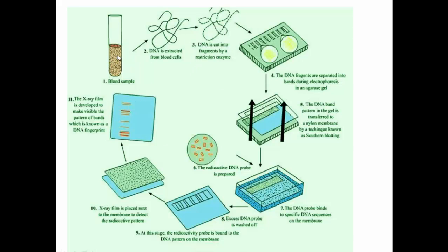In summary: first the sample is collected, then DNA is extracted, then DNA is cut by restriction enzymes, then transferred to gel electrophoresis, then attached to a nylon membrane, then the radioactive DNA probe is applied, the specific probes are bound, unbound probes are washed off, and the bound pattern is transferred to X-ray film to get the final band view.